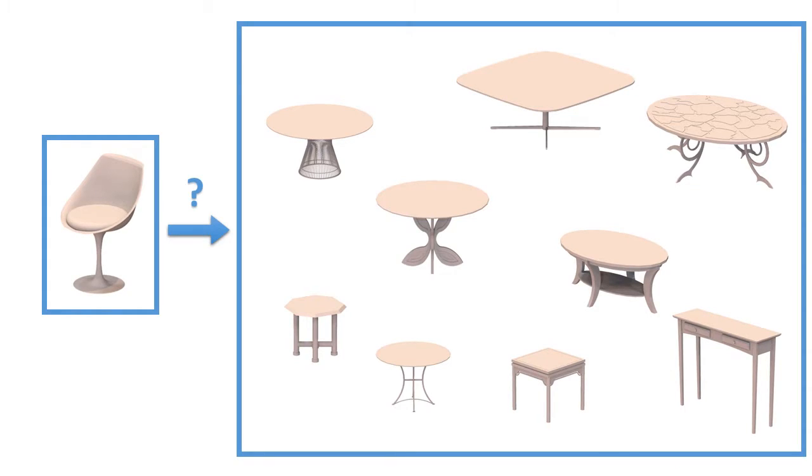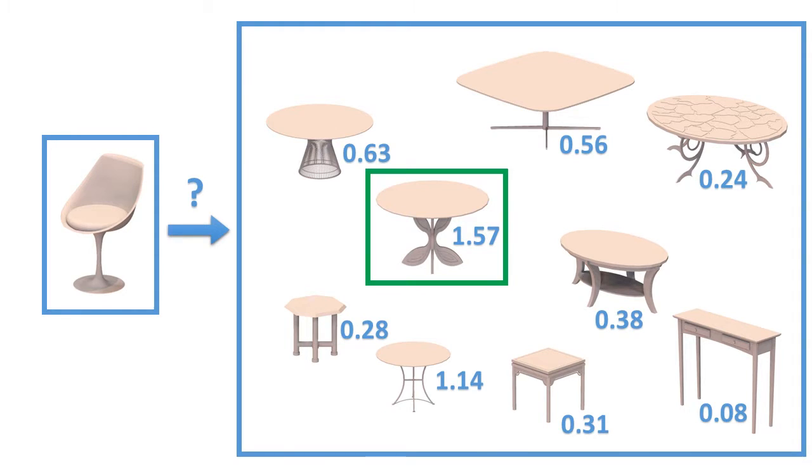The degree of style similarity between the output and the exemplar is affected by the structure of the original target model. For example, users may provide a specific target shape for style transfer, or have our algorithm automatically recommend the most compatible target given a database of shapes in a specified class.